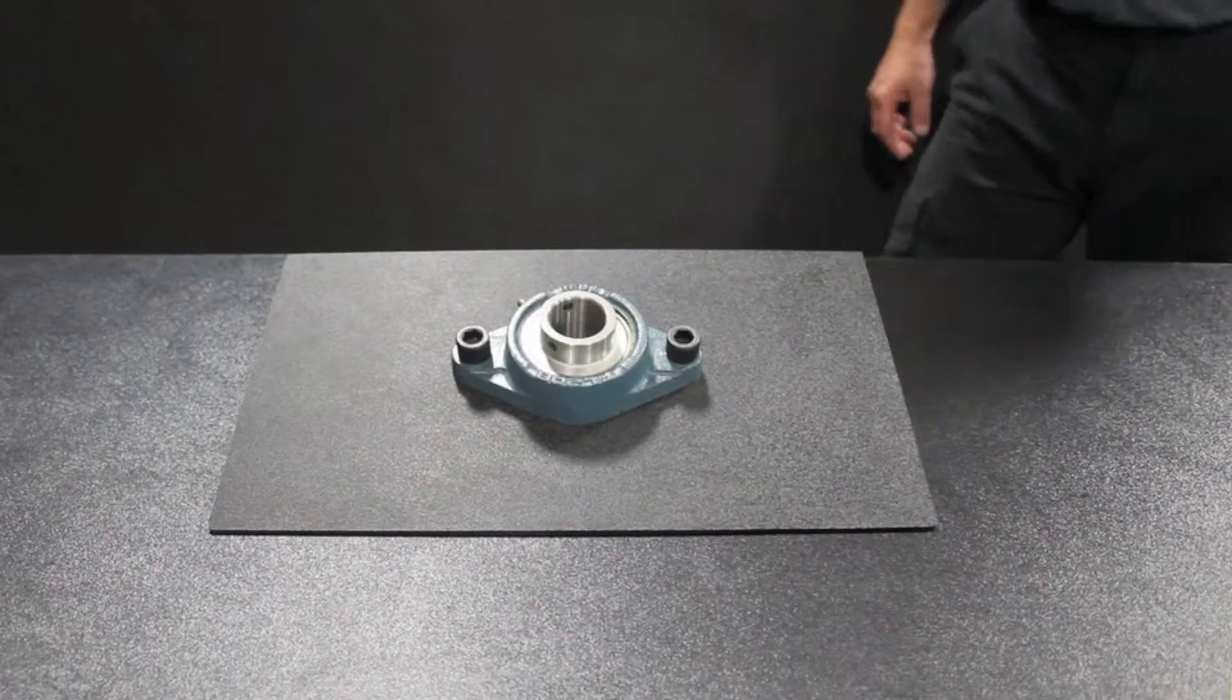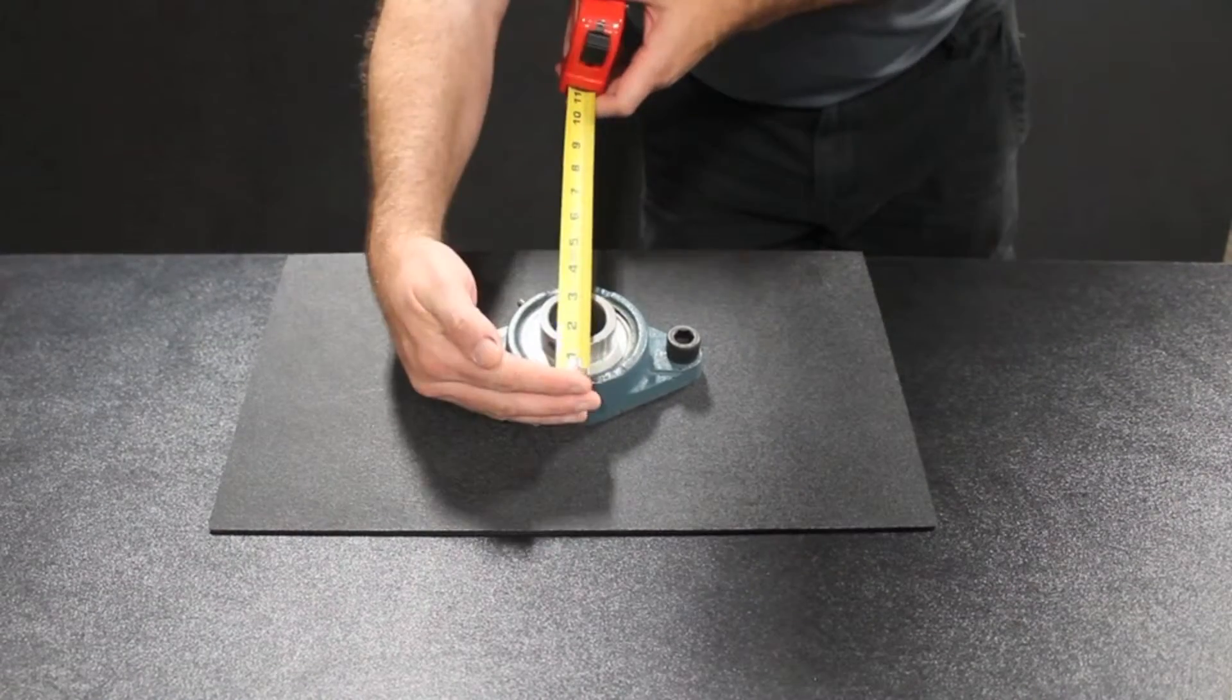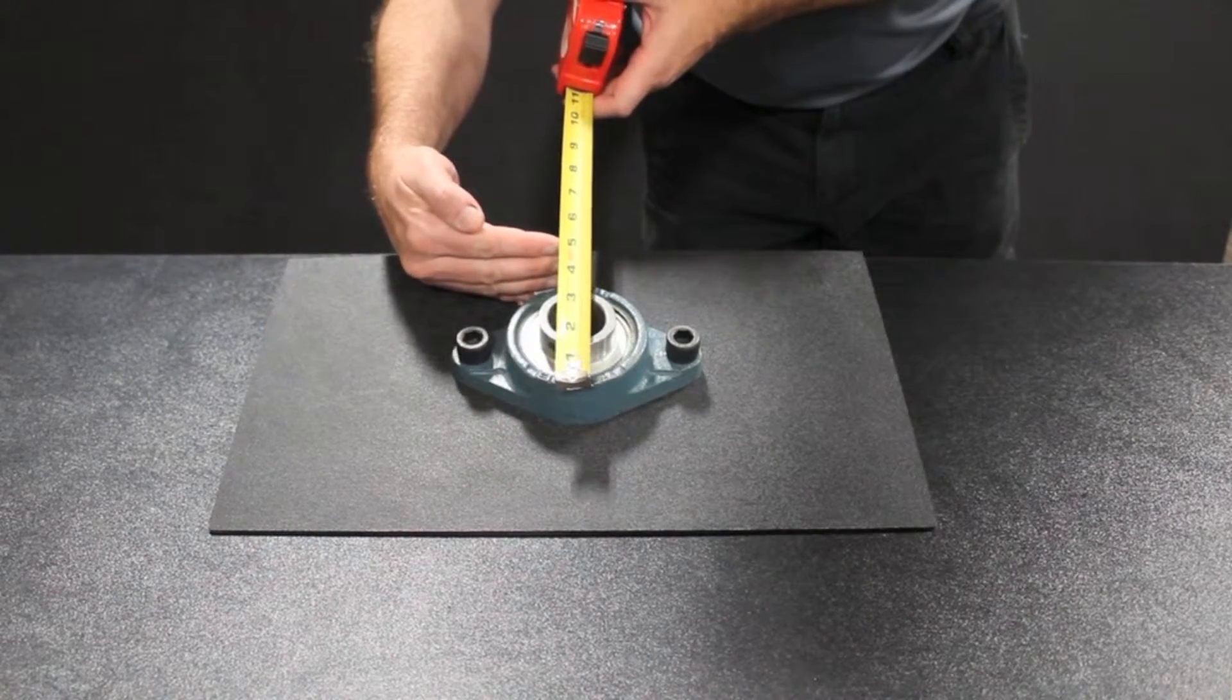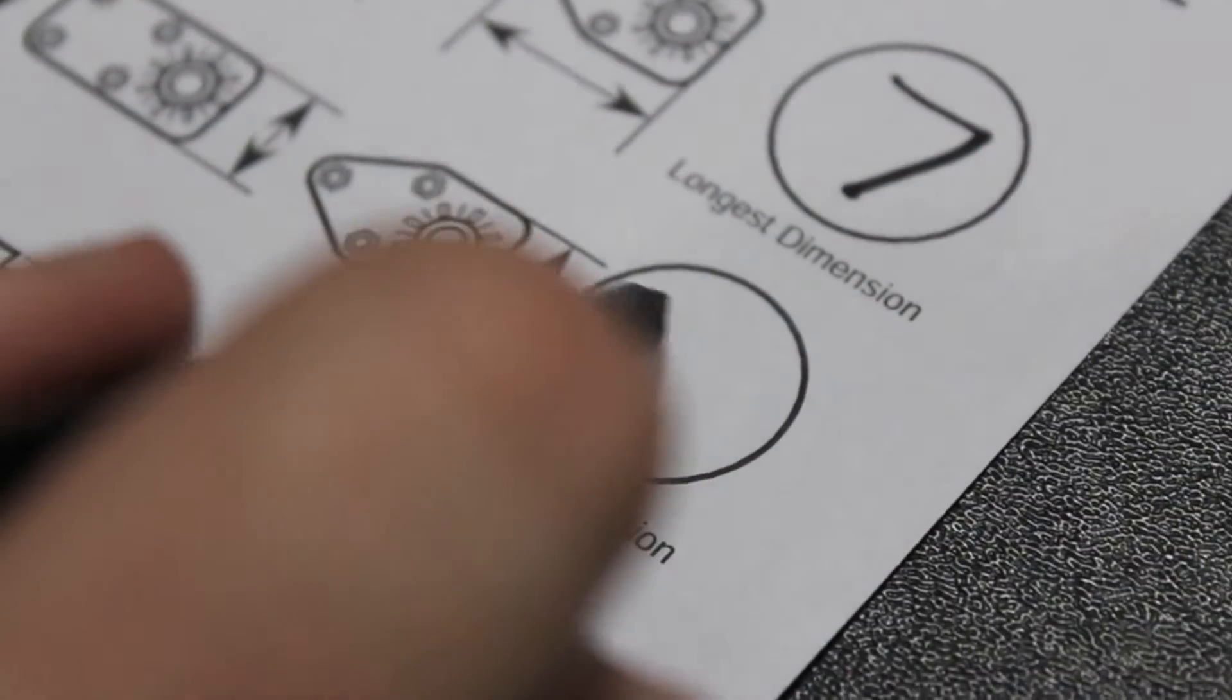The next measurement required is the widest dimension. This is measured also when viewing the bearing from the top down from the bottom most to the top most point.